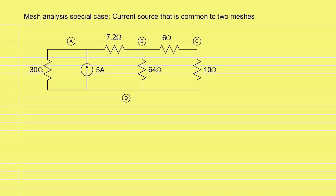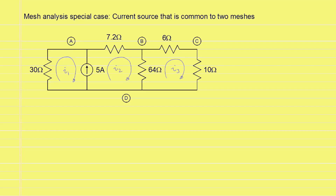In this video, we will handle the special case of a current source that is common to two meshes. The circuit shown is planar. It has three meshes defined by the mesh currents I1, I2, and I3. The five ampere current source is common to the meshes defined by the currents I1 and I2, and it requires special processing because we cannot write the voltage across the source in terms of the mesh currents and other known element values. However, by looking at the direction of current flow, we can write that the five ampere source is equal to the currents I2 minus I1, and this is the first equation that will be useful in mesh analysis for this circuit.